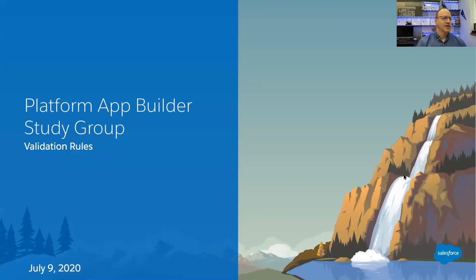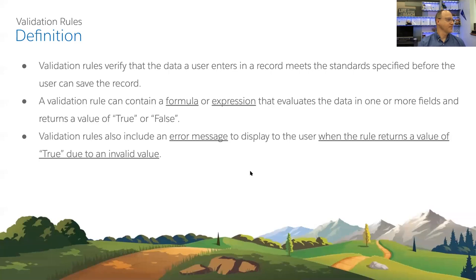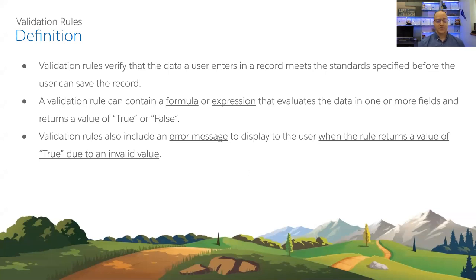Moving on to validation rules. Validation rules verify that the data a user enters in a record meets a specified standard before the user can save the record — helping keep your data clean. A validation rule contains a formula or expression that evaluates data in one or more fields and returns a value of true or false.